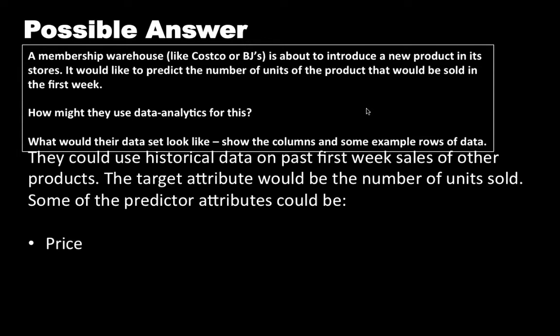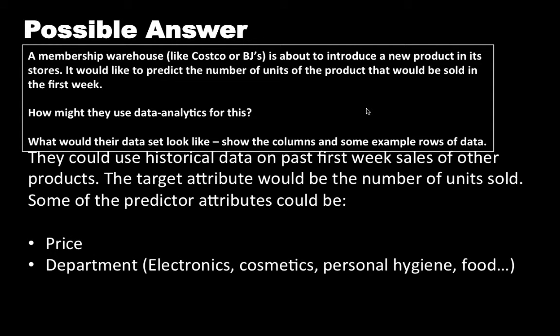And some of the predictor attributes could be things like, what was the price of the product? Here, we are looking at historical data on other new products that they brought into the warehouse and information on how those products performed. So obviously, price matters. And the department to which this product belongs, is it electronics, cosmetic, personal hygiene, food, etc.